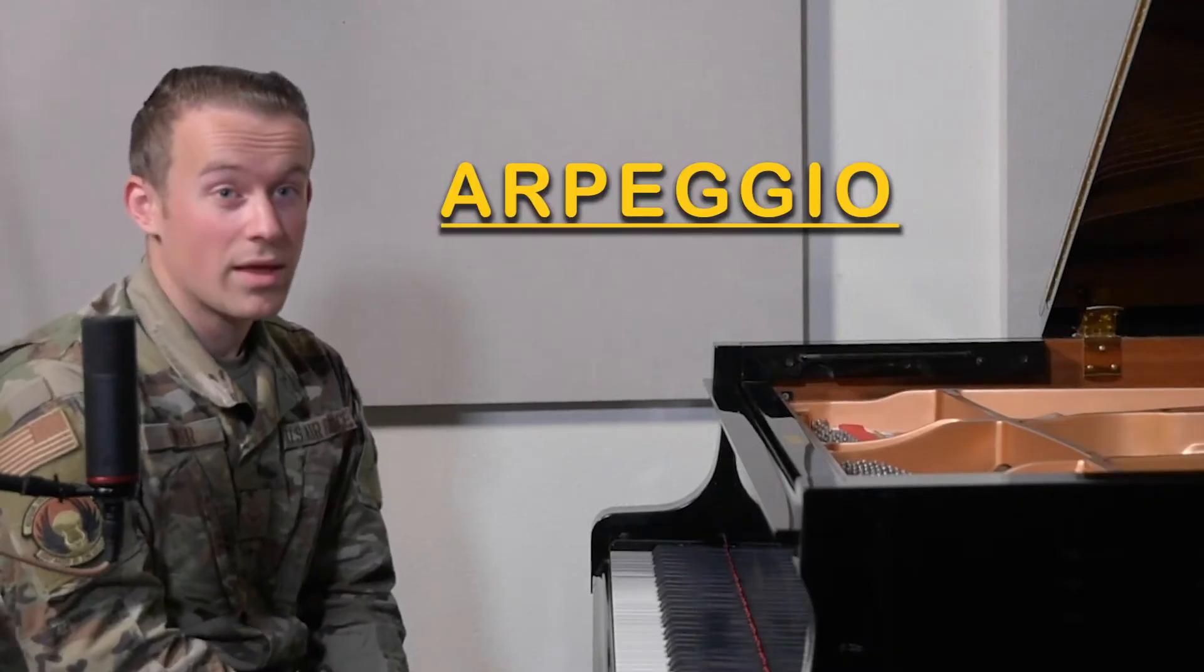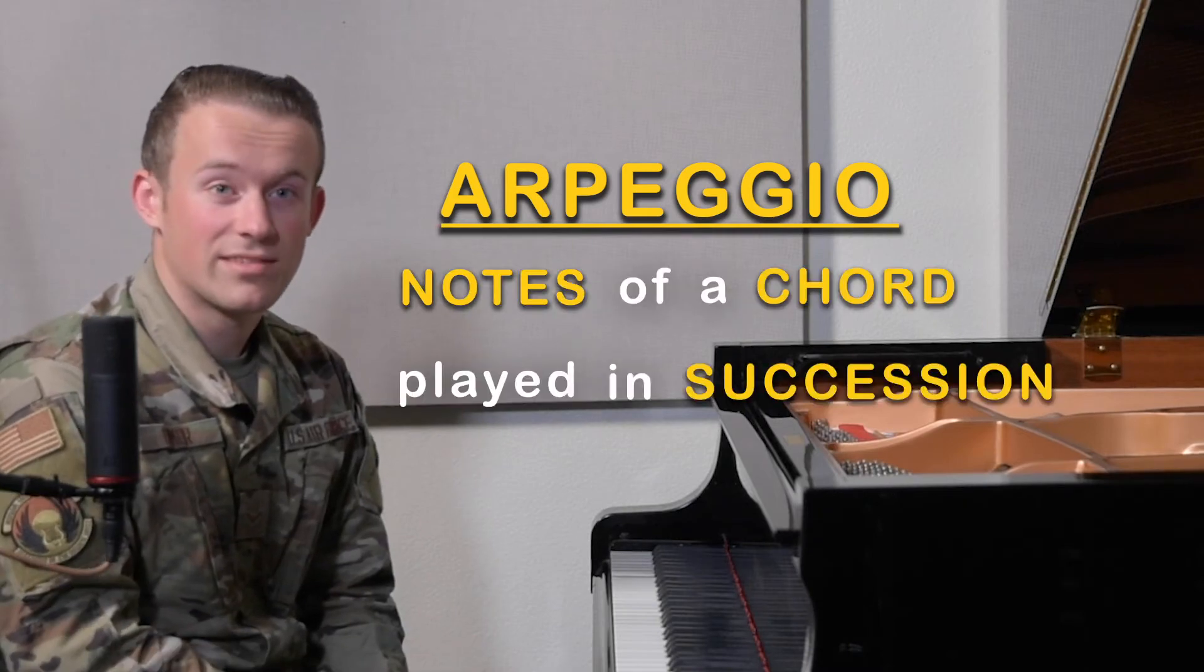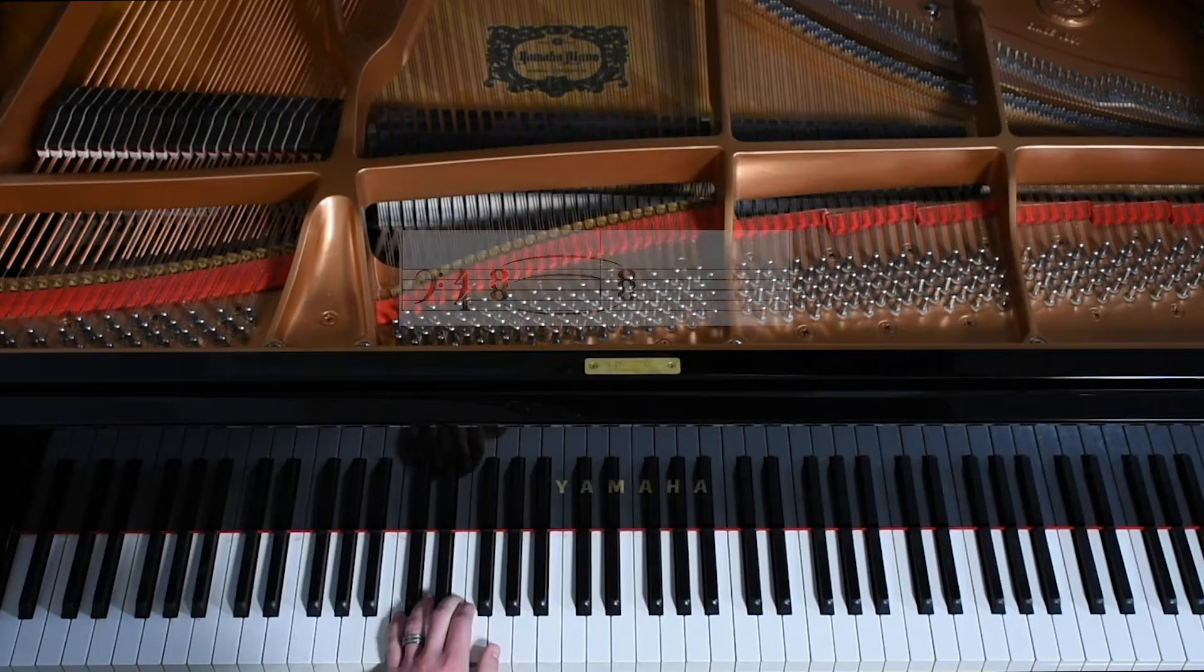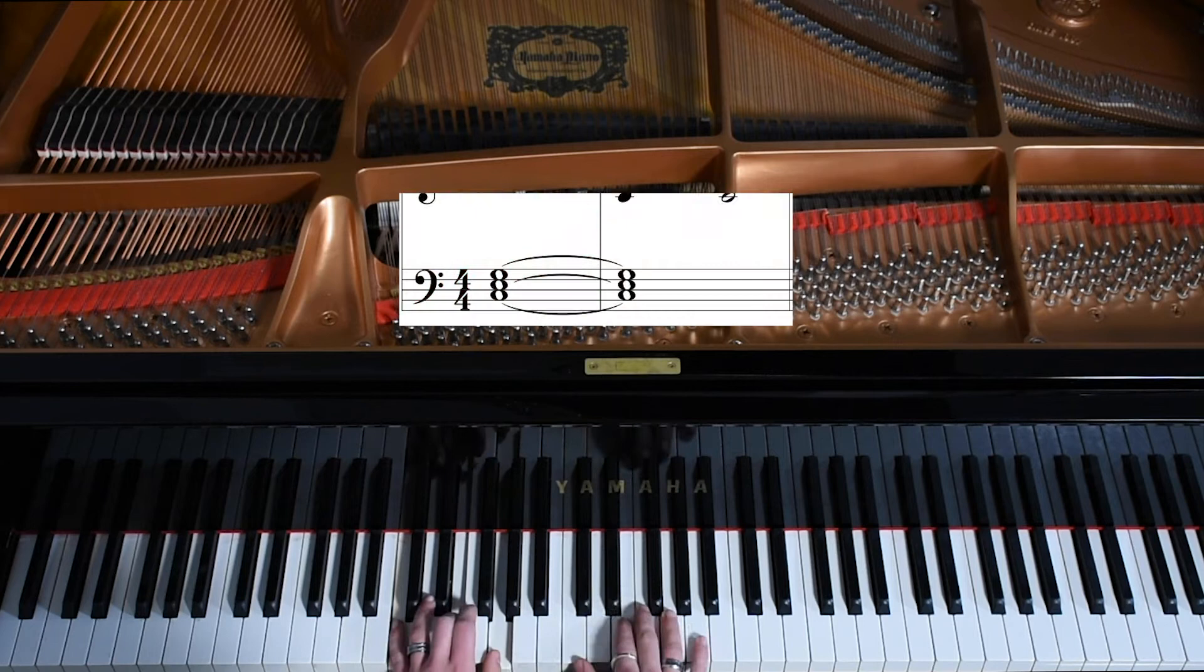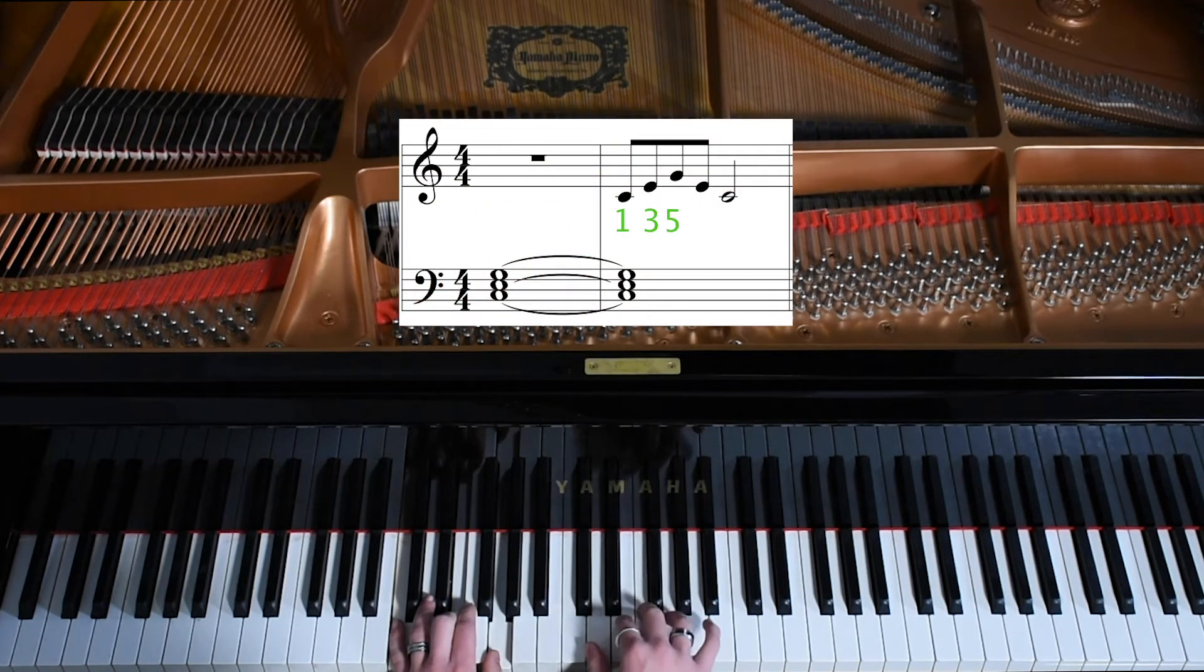First off, what is an arpeggio? An arpeggio is the notes of a chord played in succession. Let's look at a C major chord. Its arpeggio would just be the notes of the C major chord played in succession.